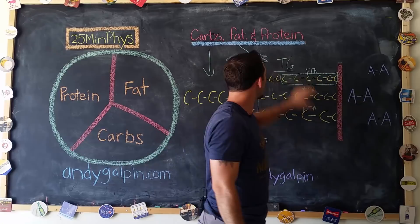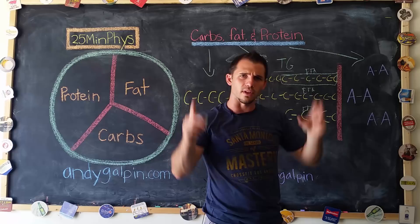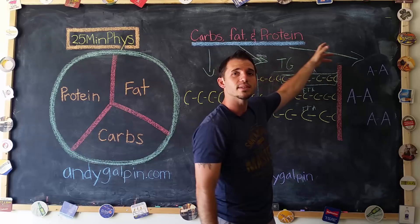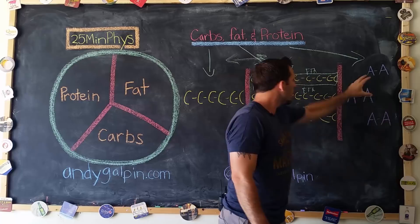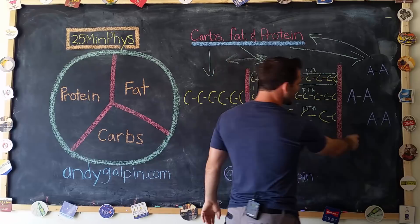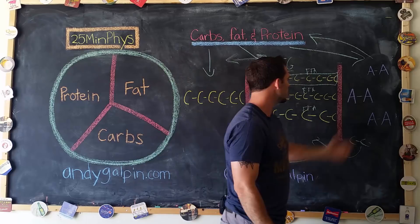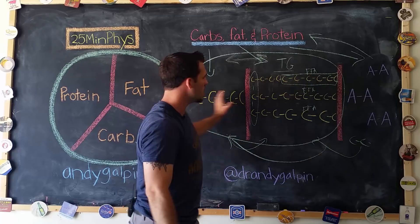Protein, as mentioned with the weight plate analogy, is very different. When you break down protein, you're not going to have excess amounts of carbon available — what you'll have is a bunch of amino acids. Amino acids are the building blocks of proteins. When you break down protein in your body, you break it down into different amino acids. Inversely, if you want to build a protein, you combine amino acids together.